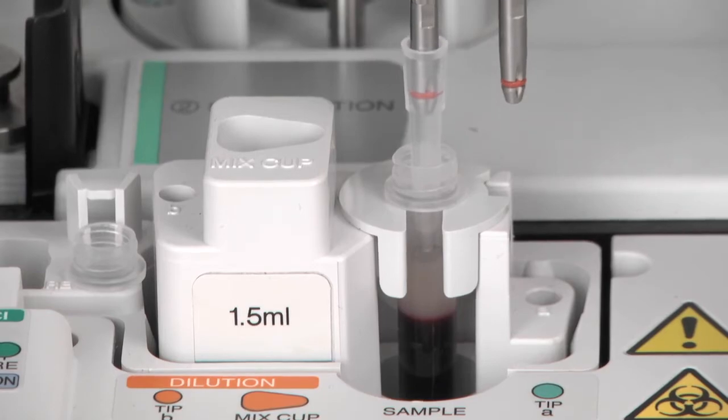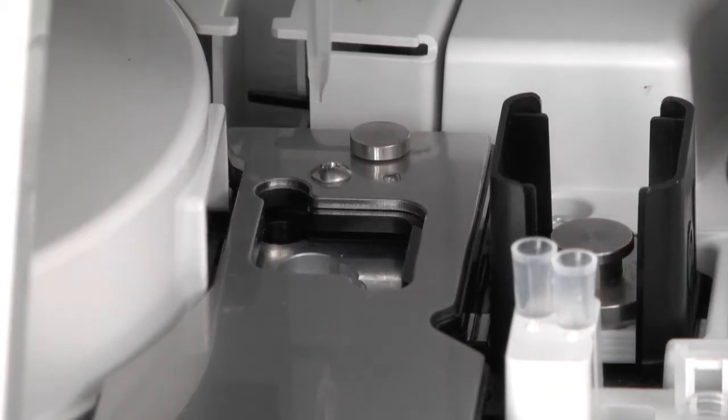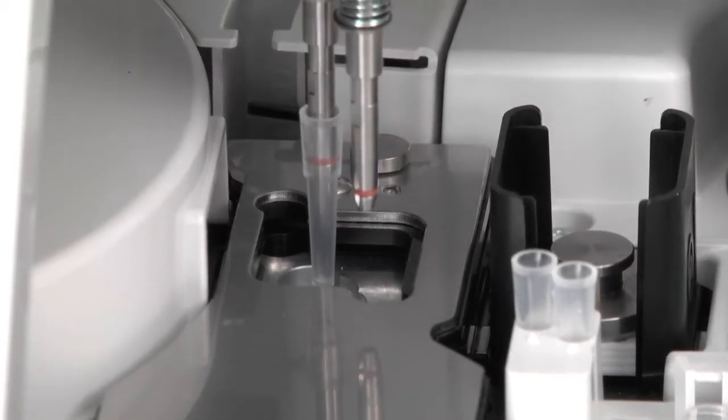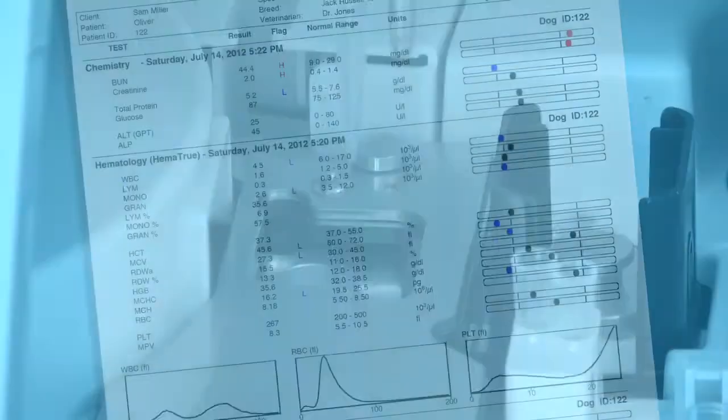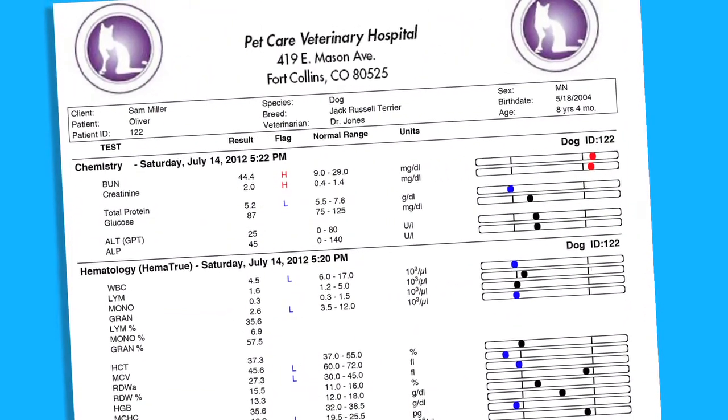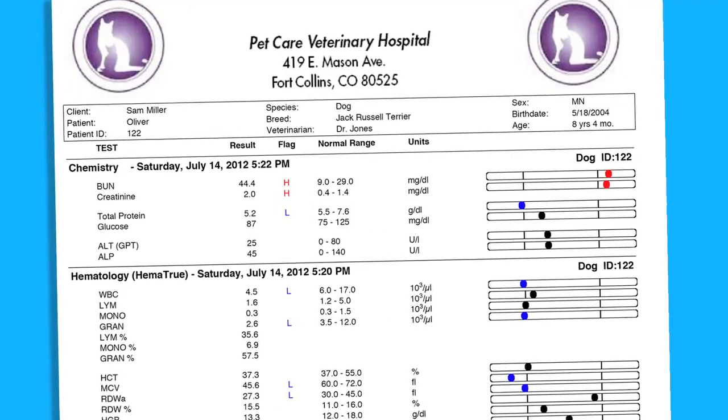You can run any combination of up to 22 tests at a time in one sample run with just 1.5 milliliters of sample, and results will be combined into one easy-to-read report using Heska's integrated software.